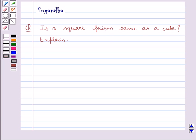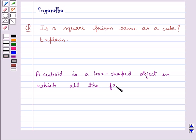First let's see what a cuboid is. A cuboid is a box-shaped object in which all the faces are rectangles.